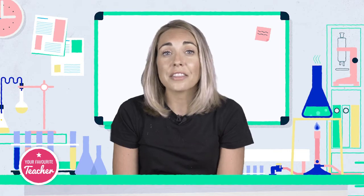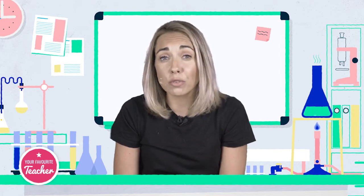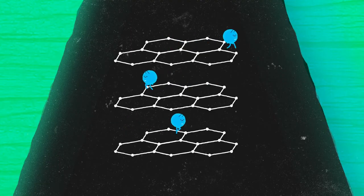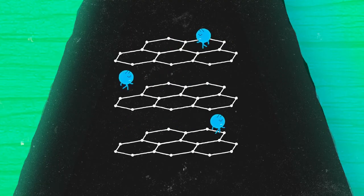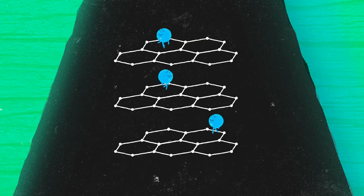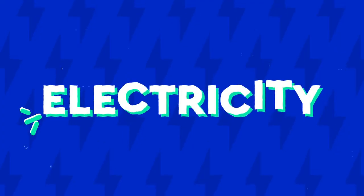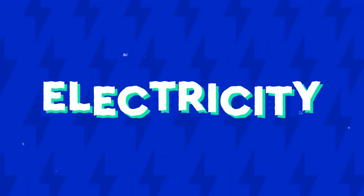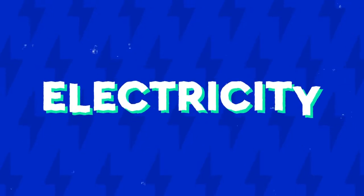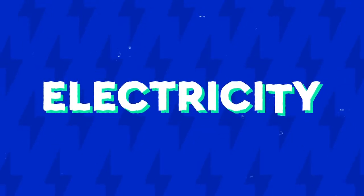There is no covalent bond between the layers and the electron in the fourth outer shell is delocalised and moves freely through the structure. The delocalised electrons allow graphite to conduct electricity in a similar way to a metallic structure.